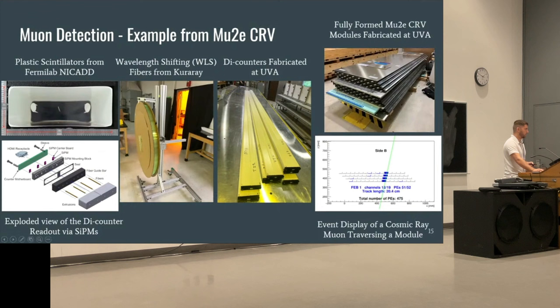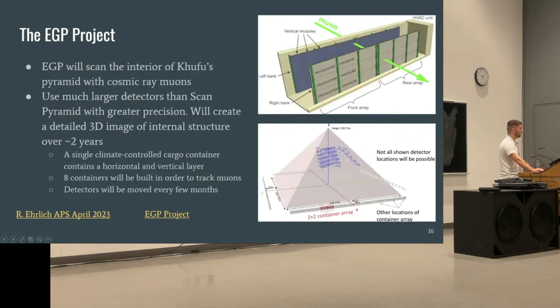Here are some of our fully formed modules for the Mu2e cosmic ray veto, and here's an example of an actual event in our test stand where a muon traverses the detector and lights up in blue. You can actually compute where a muon travels through this type of detector.